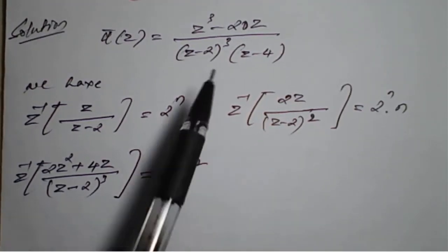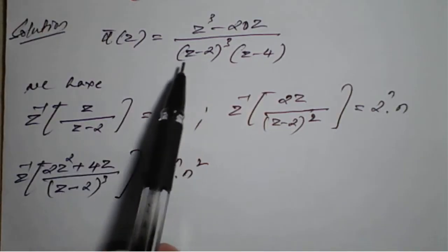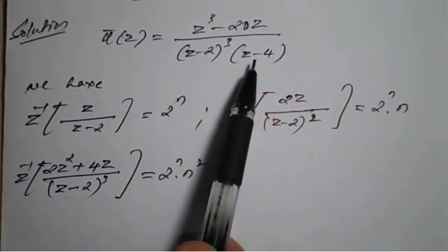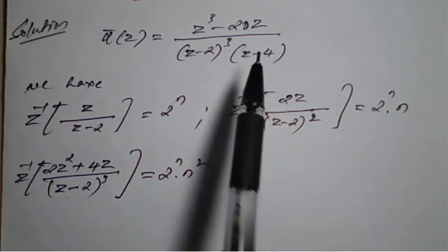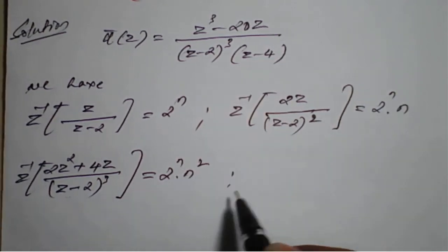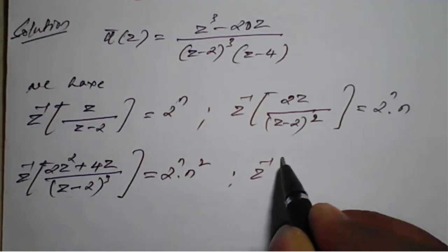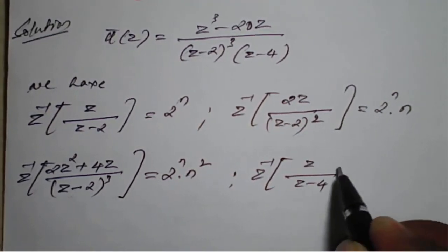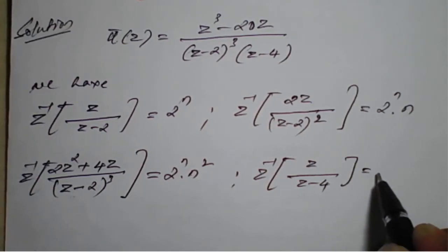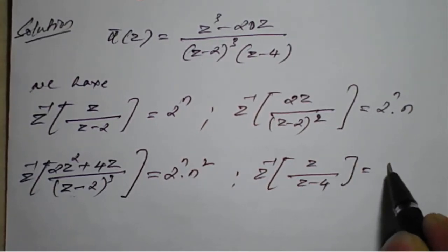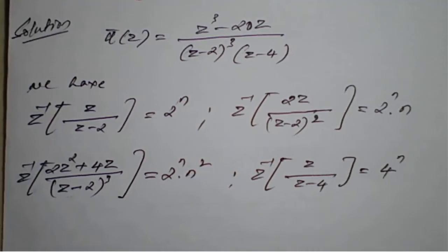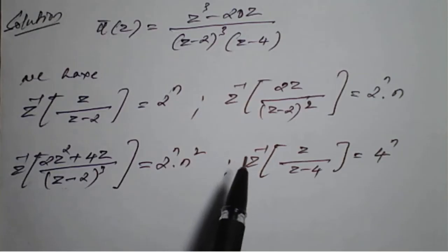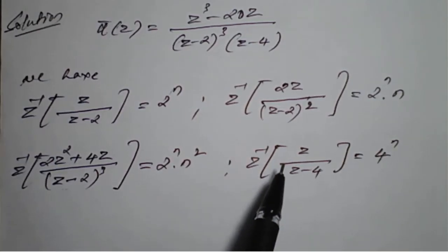We have covered (Z-2) once, (Z-2)², and (Z-2)³. Finally, Z-inverse of Z/(Z-4) — only appearing once, numerator is always Z, giving result Kⁿ = 4ⁿ, since K=4. Once we have these, we rearrange by seeing the denominator — this is a very important step.